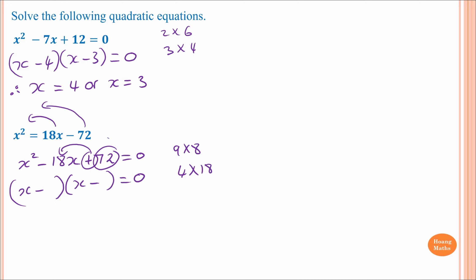Then try 12 and 6: they add up to give 18, so the factors are 12 and 6. Both are negative so it doesn't matter where we put them. Therefore the answer is x equals 6 or x equals 12.